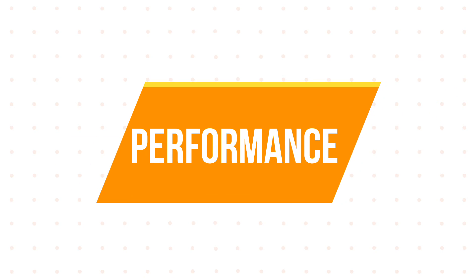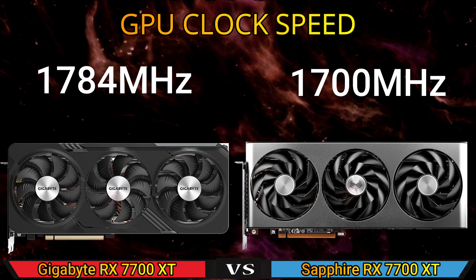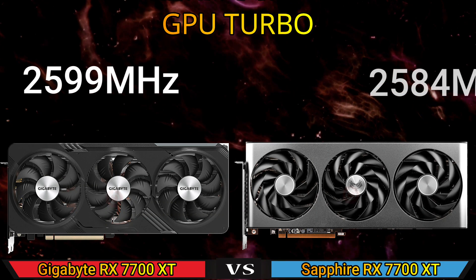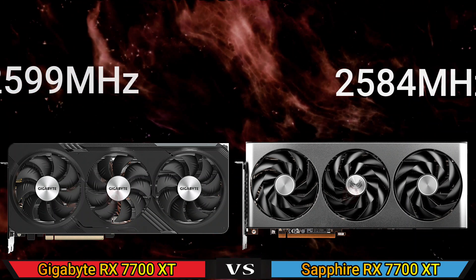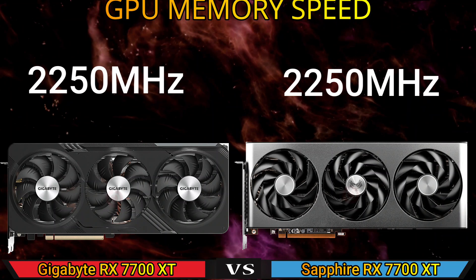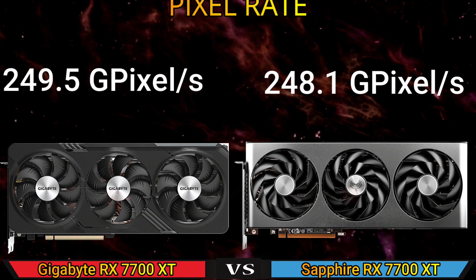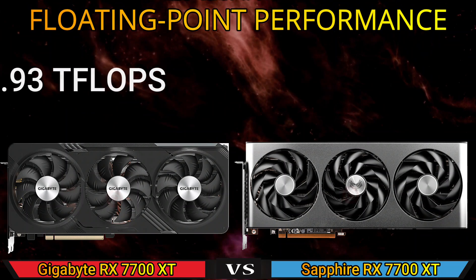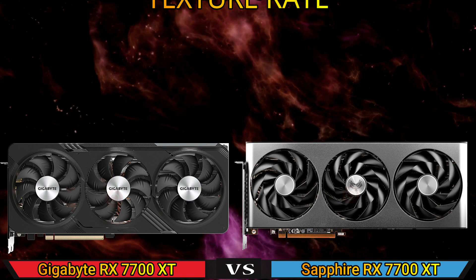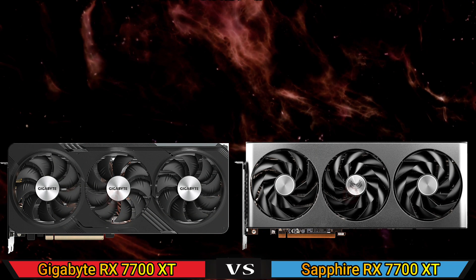Part 2: Performance. GPU clock speed. GPU turbo. GPU memory speed. Pixel rate. Full rating point performance. Texture rate. Shading units.